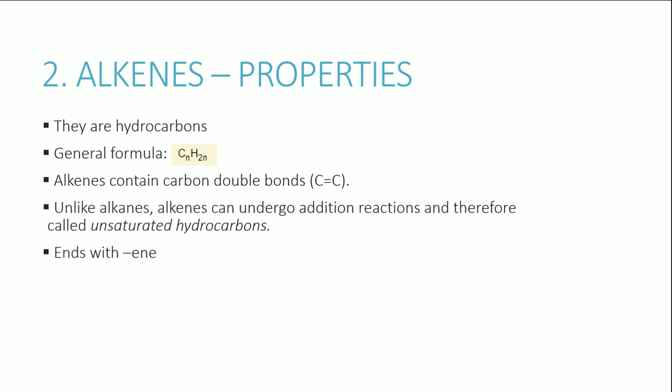Alkenes are similar to alkanes — they are also hydrocarbons, containing only carbon and hydrogen. The differentiating factor is that alkenes have the functional group of a carbon-carbon double bond, giving them a general formula of CₙH₂ₙ. Because they have carbon-carbon double bonds, they can undergo addition reactions, and are therefore called unsaturated hydrocarbons. Remember, carbons can have up to four bonds.